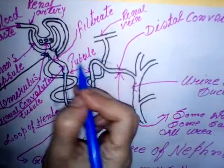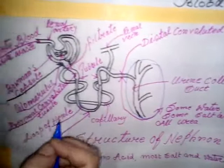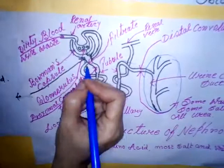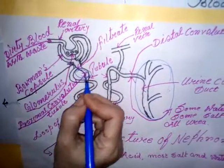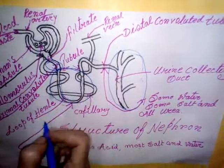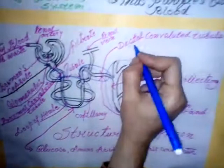The tubule has three major divisions. The first part that remains attached with the Bowman's capsule is known as the proximal convoluted tubule. Then the U-shaped part is known as the loop of Henle. The third part that remains connected with the urine collecting duct is known as the distal convoluted tubule. The bundle of blood capillaries present inside the Bowman's capsule is known as the glomerulus.